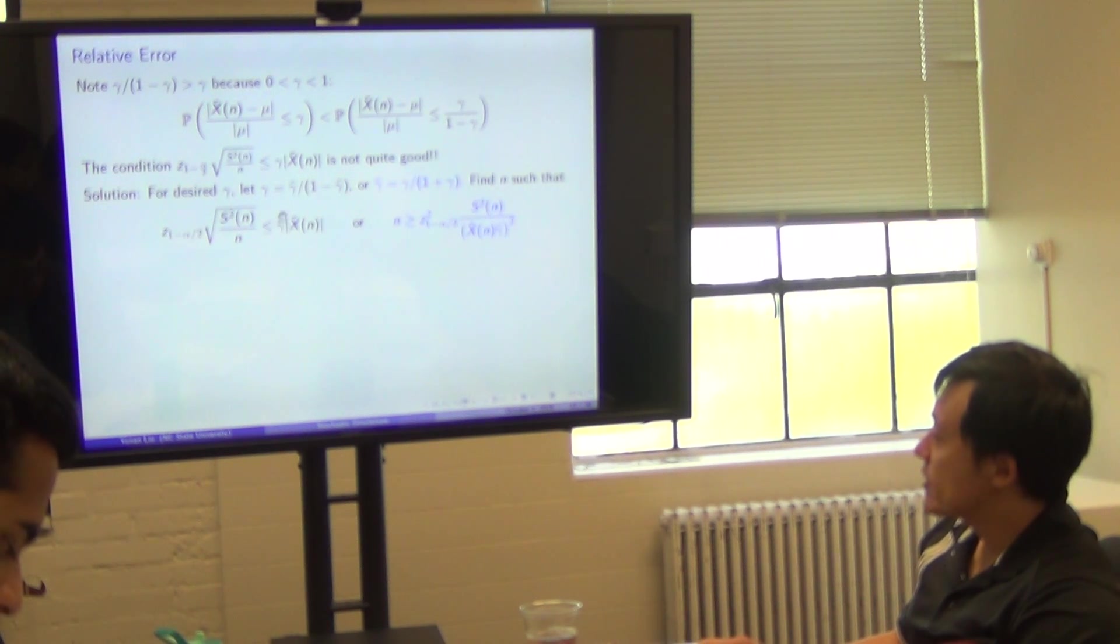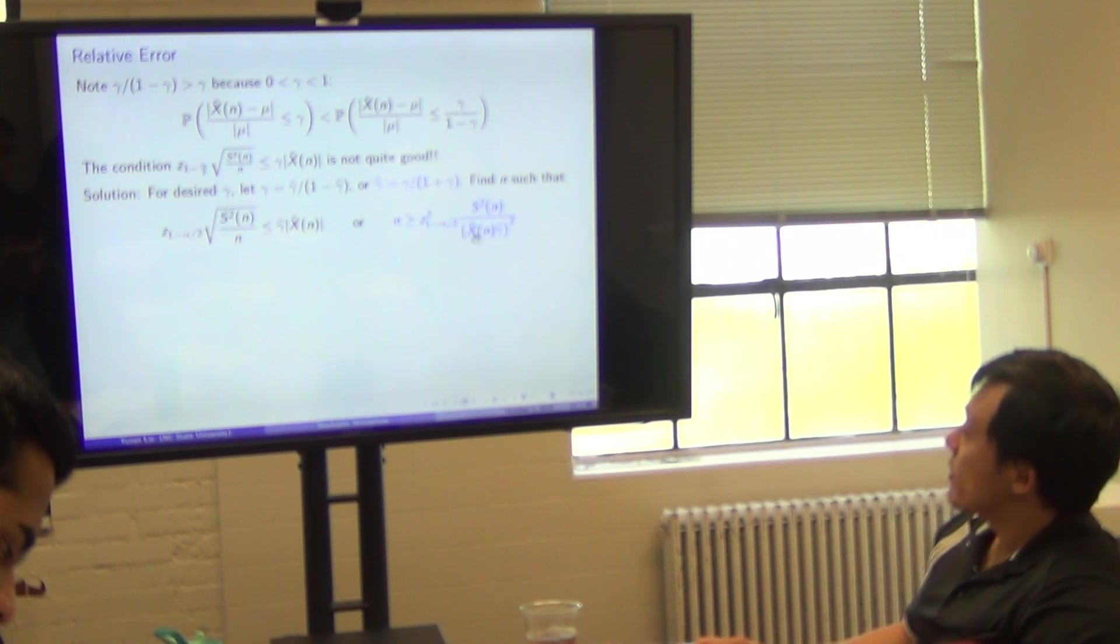Basically, you're organizing the terms and moving things around and take squares on both sides. You have an n greater than this quantile, and the right-hand side is really, you recall that the right-hand side for the absolute error, this should be epsilon squared.